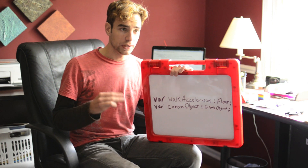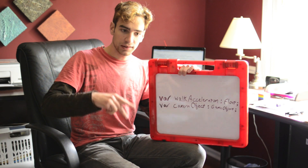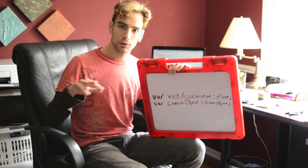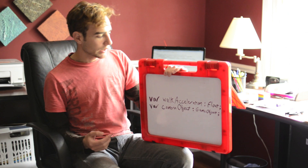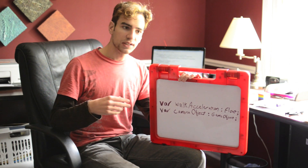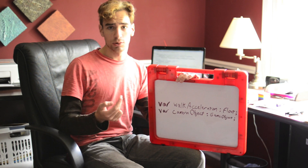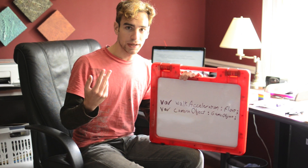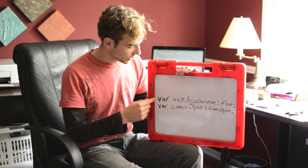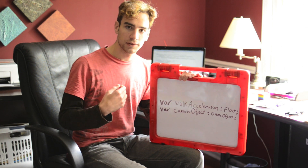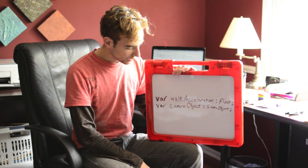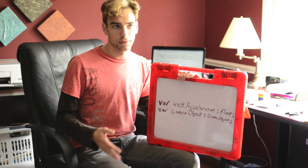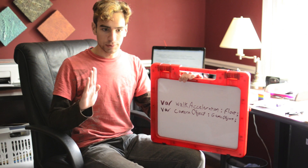The way it's going to work is we're going to have two input axes: horizontal and vertical. The vertical input axis is going to be W and S, and the horizontal input axis is going to be A and D. When you access the input axes, it's going to give you back either a positive one, a negative one, or a zero, depending on which keys are being pressed. We're just going to multiply that by walk acceleration and add that as a relative force to the rigid body.